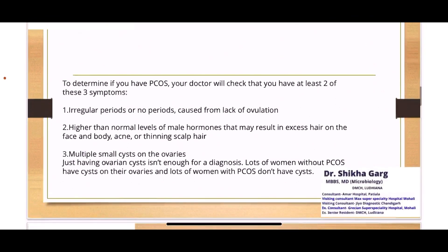To determine if you have PCOS, your doctor will need at least two to three symptoms, which may include irregular periods or no periods, higher than normal levels of hormones like androgens, and multiple small cysts on the ovaries detected with ultrasonography.